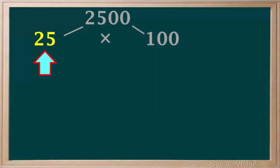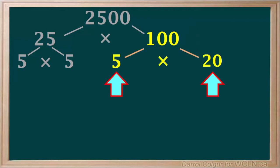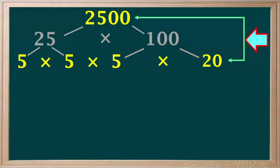25 is divisible by 5. We'll break down 25 into 5 times 5. We can factor 100 in several different ways. Let's break it down to 5 times 20. So we'll write down 100 as 5 times 20. We'll add a multiplication sign here. Because 5 times 5 times 5 times 20 is equal to 2500.